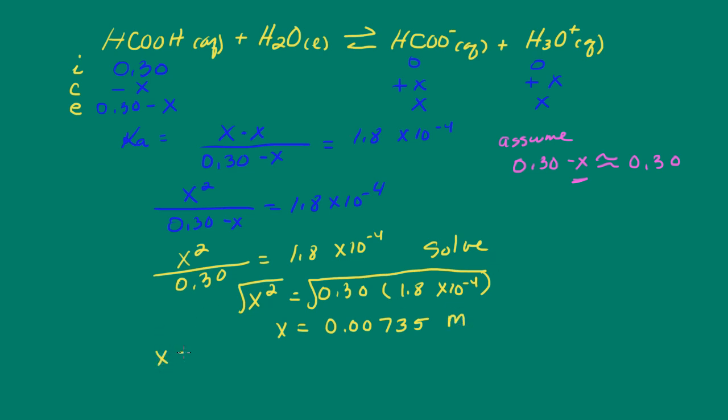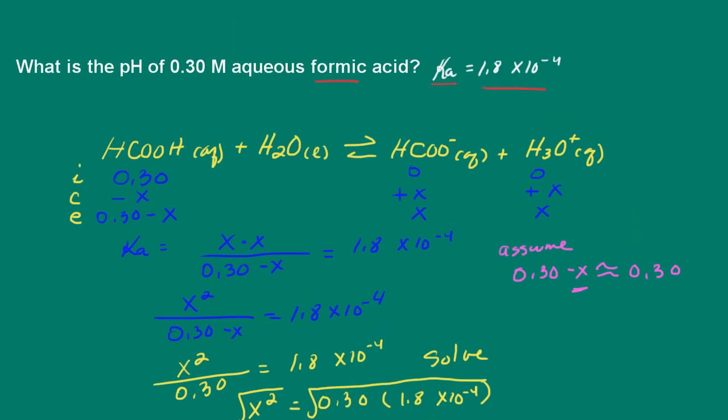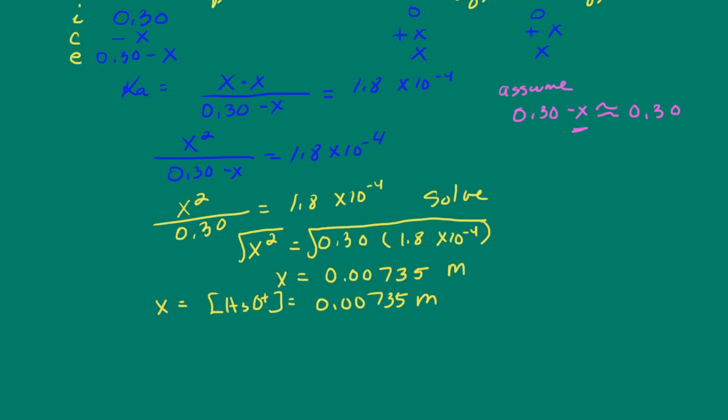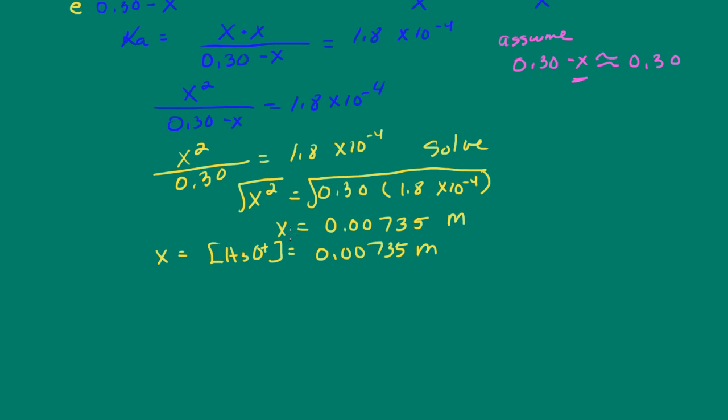Now, remember, X is equal to the hydronium ion concentration. And we are asked to determine the pH of the solution. So pH is equal to the negative log of the hydronium ion concentration.